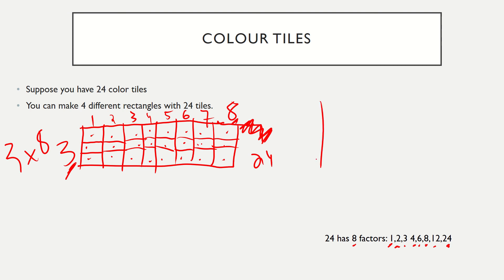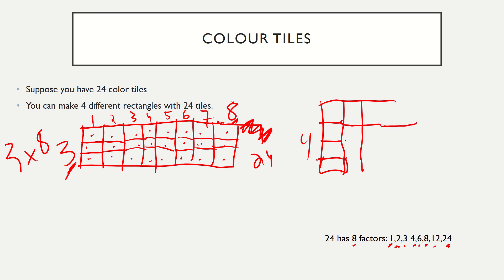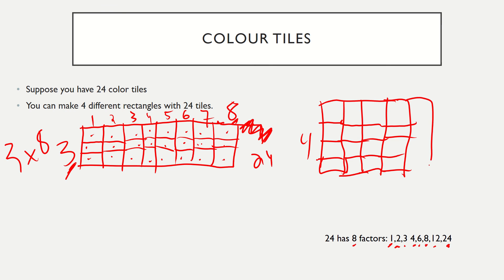Let's do one more — four times six. I'm going to draw four rows and six columns. Four times six equals 24, so I have to draw six columns. Here I have six columns and four rows, so when I do my multiplication: four times six, four rows times six columns.